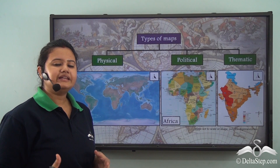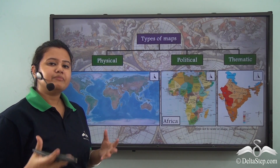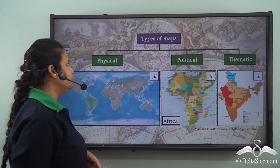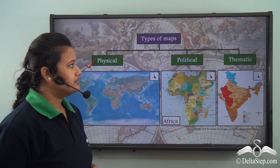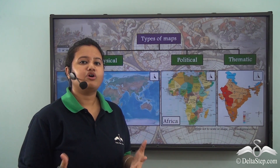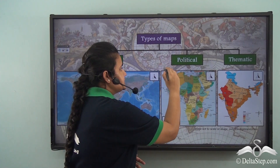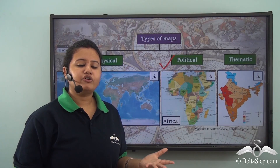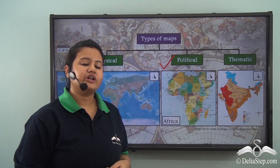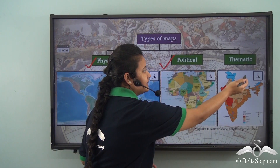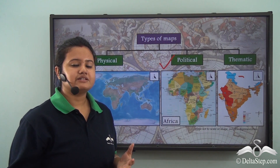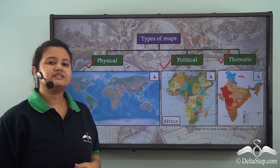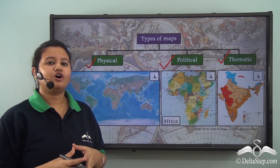Thus we find that maps are of various types. The maps that define physical features of a place are called physical maps, whereas the maps that show political divisions of a region are called political maps. Also there are some special maps that provide particular information about a place — for instance climate, vegetation, minerals distribution — and these maps are called thematic maps. So these are the broad classifications of maps.